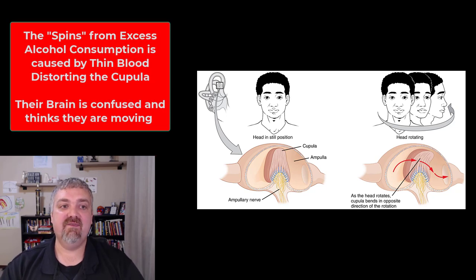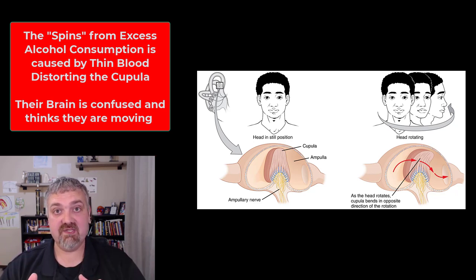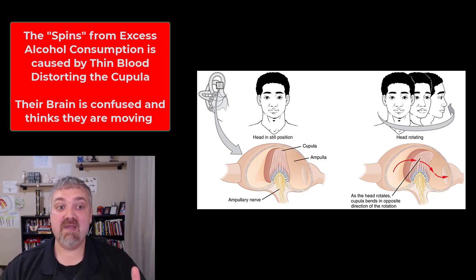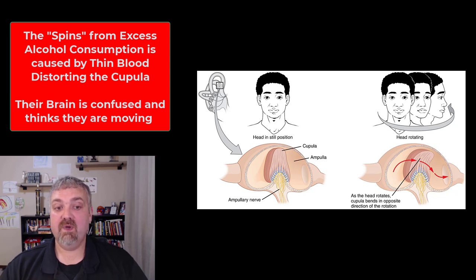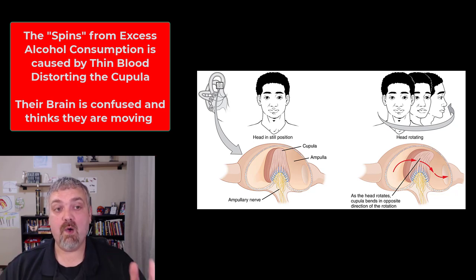Another example students often bring up is getting the spins after consuming too much alcohol. Alcohol thins the blood and actually changes the density of the fluids that reach the cupula compared to the blood. This can distort these hair cells even when you're not moving. You might be sitting, standing, or lying perfectly still, but the brain is receiving information that you're moving — which is why it may feel like the room is spinning. It's an issue of fluid density triggering the hair cells without actual movement.